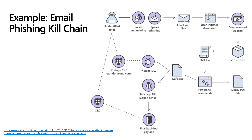Let's take a look at another example — this time with a phishing email. Here's how a phishing email follows the cyber attack kill chain. This is a social engineering campaign using spear phishing where the user clicks on a link in an email, which then downloads a file from a compromised website that runs suspicious and malicious code on that machine, gaining command and control and allowing exploitation, domain dominance, and eventually carrying out their objective.